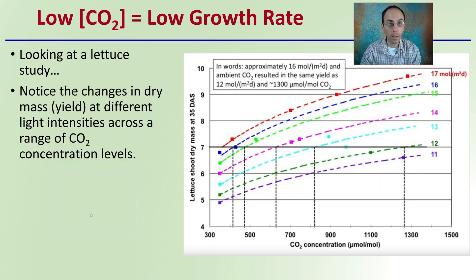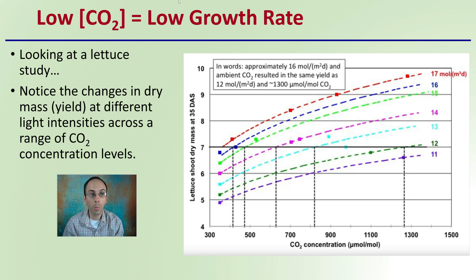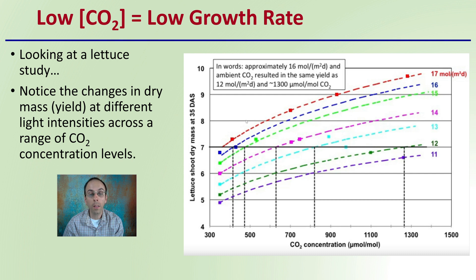Low carbon dioxide concentration equals a low growth rate. Looking at a lettuce study, there are changes in dry mass or yield at different light intensities across the range of CO2 concentration levels. We can conclude that increasing light intensity, no matter what the concentration of carbon dioxide, will increase yields. We can also see the trend that as you increase carbon dioxide concentration from ambient — around 400 ppm — there is an overall increase in dry mass or yield.